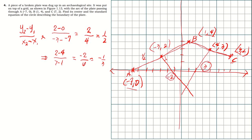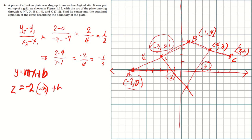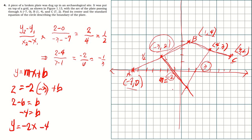The center is the intersection of the two perpendicular bisectors. Using y equals mx plus b: for the first bisector with slope negative two passing through midpoint negative three, two — substituting: two equals negative two times negative three plus b, giving two minus six equals b, so b equals negative four. The equation of this bisector is y equals negative two x minus four.